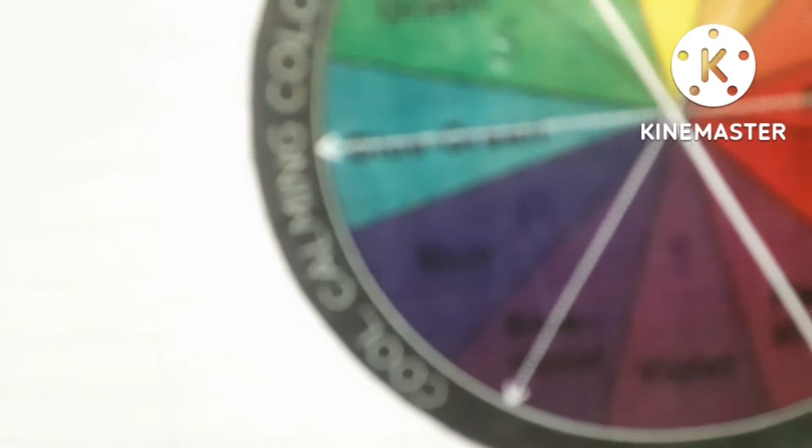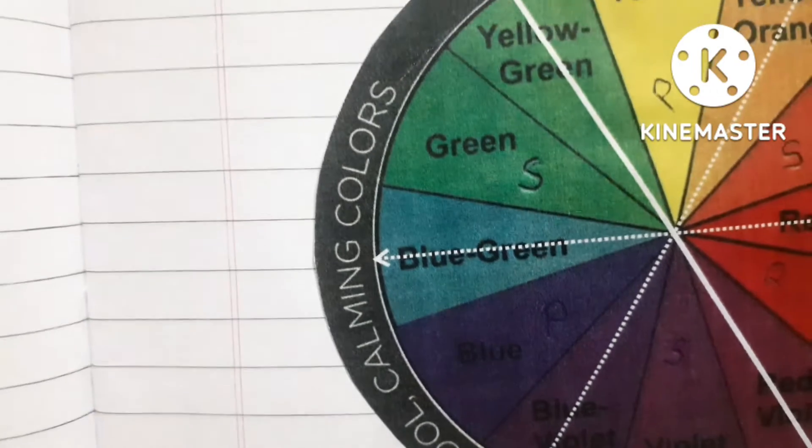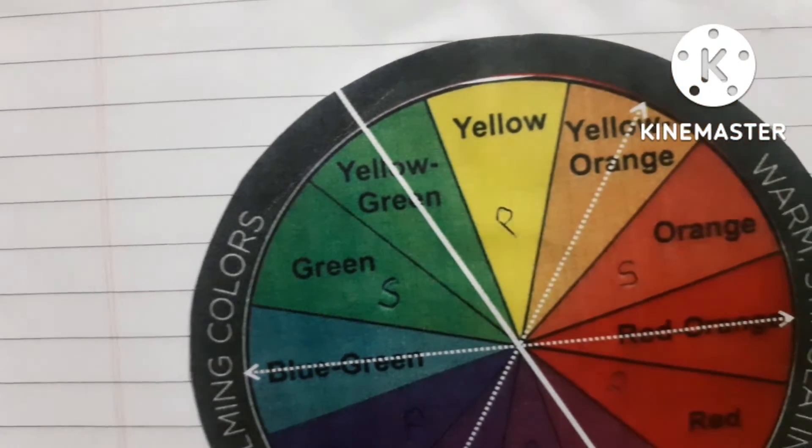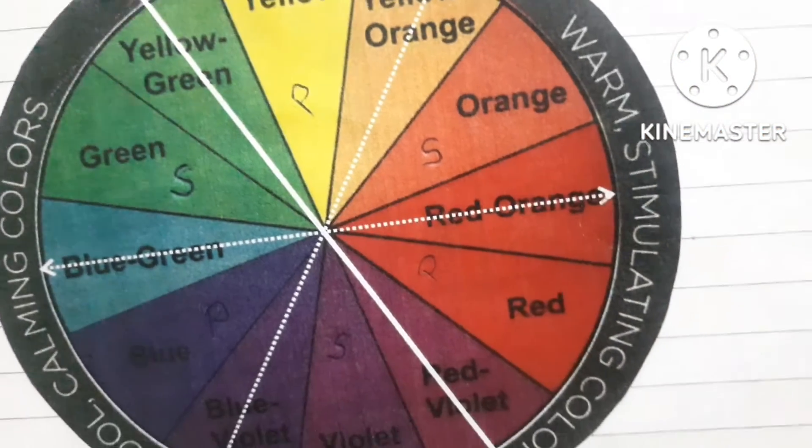Now we will understand what are tertiary colors, so we will see the color wheel. Now in the color wheel, here is P and S. P is primary colors, S is secondary colors.